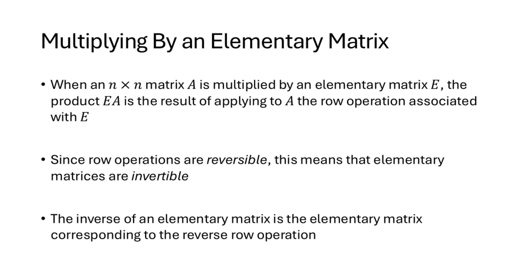So how does this relate to matrix inverses? When we multiply an n by n matrix A by an elementary matrix E, that product E times A turns out to be the result of applying that row operation to the matrix A. And since our row operations are reversible, elementary matrices are invertible. The invertibility of elementary matrices is going to tell us when a general n by n matrix is invertible.